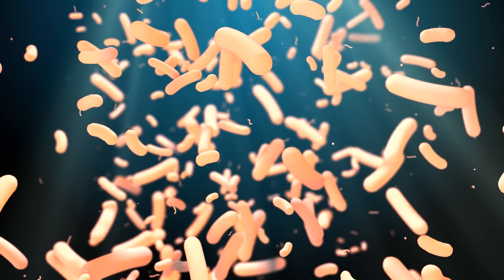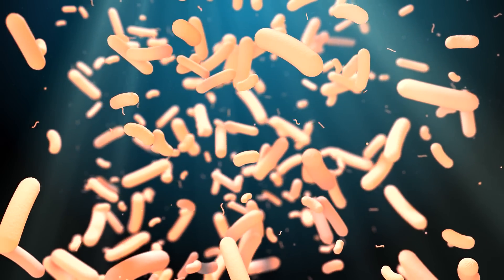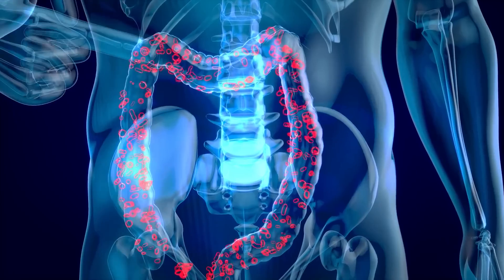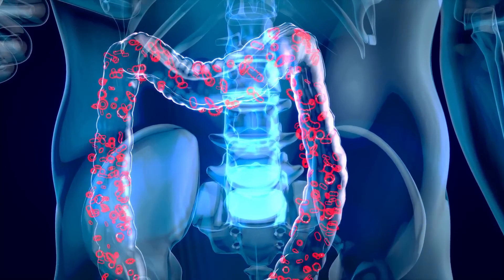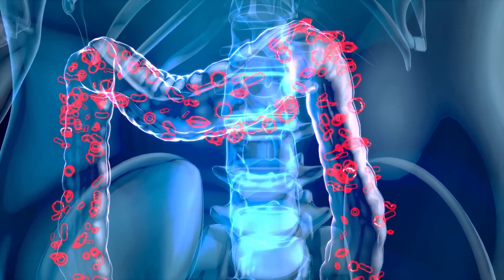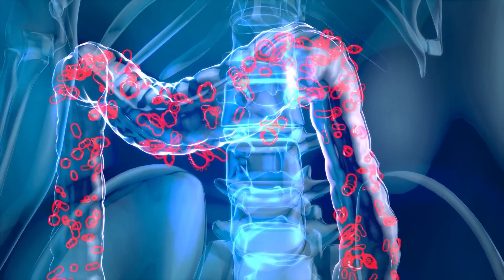There are many different types of short chain fatty acids that are given off. The main short chain fatty acids are acetate, propionate, and butyrate.